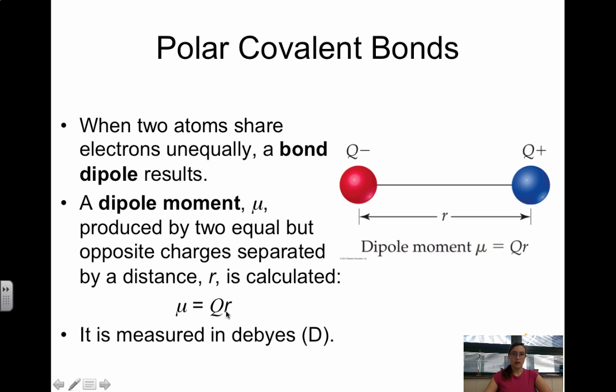And the way to calculate is using mu equals Q times R. So Q are the opposite charges. So maybe it's plus 1 and plus 2. Q would be 2. R is the distance between the nuclei. And dipole moment is measured in Debyes, which is capital D. And you can actually see an example problem in the book.